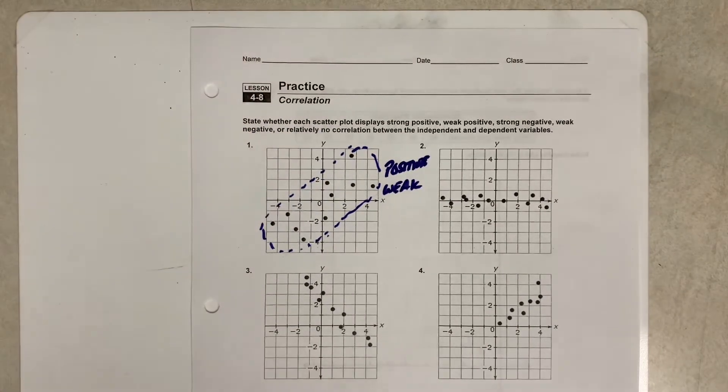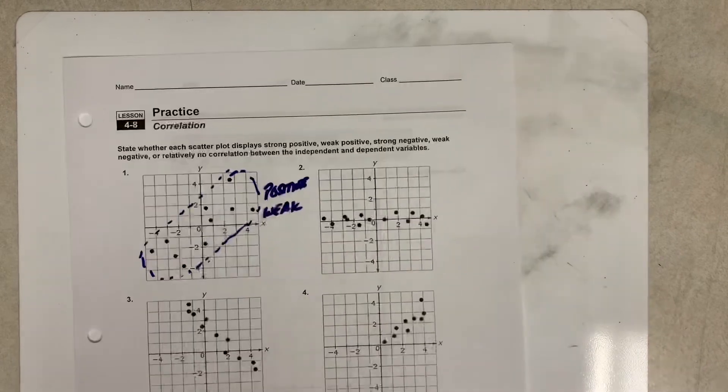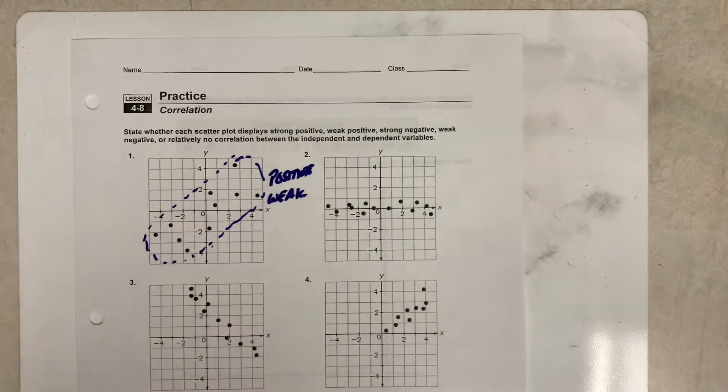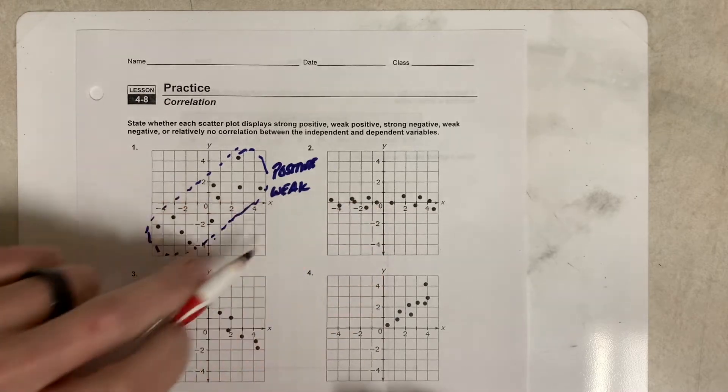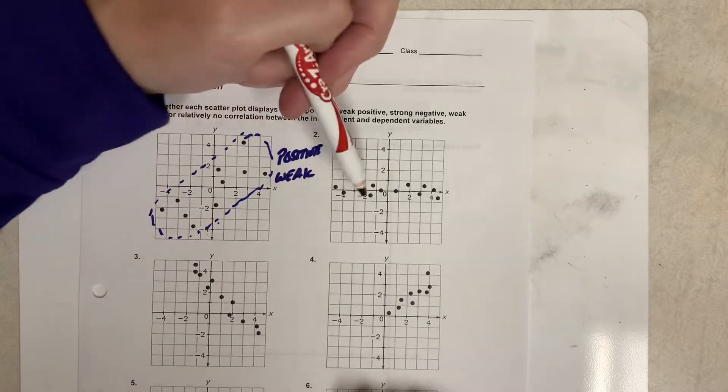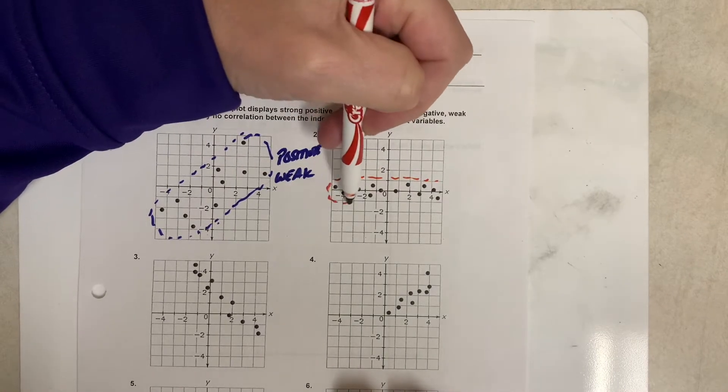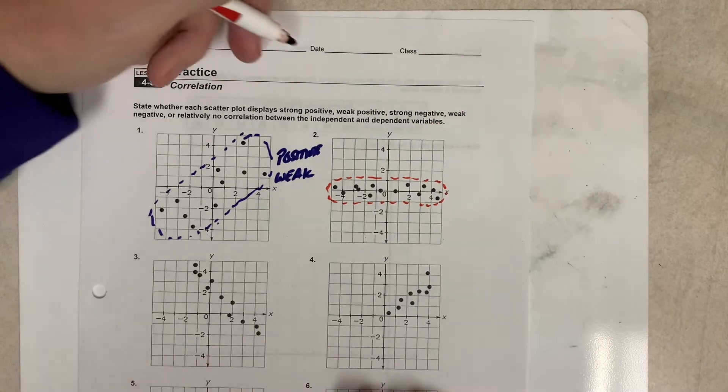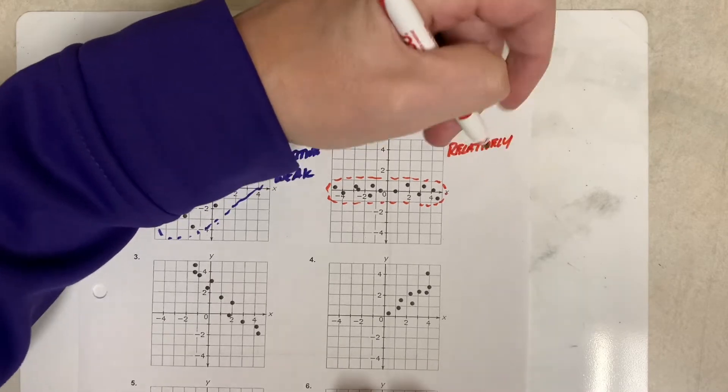All right, let's look at the next one, number two. This one, the dots are all kind of clustered around the x-axis here, but they're all kind of spread out like this, and so it doesn't look like there's any real upward or downward motion. So if I kind of box these in, they all just kind of cluster on the x-axis, so this would be relatively no correlation.